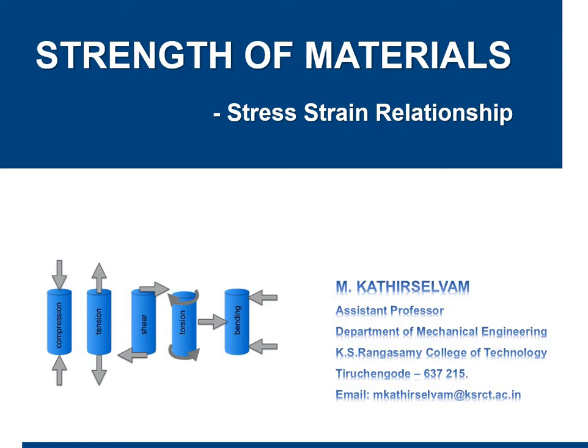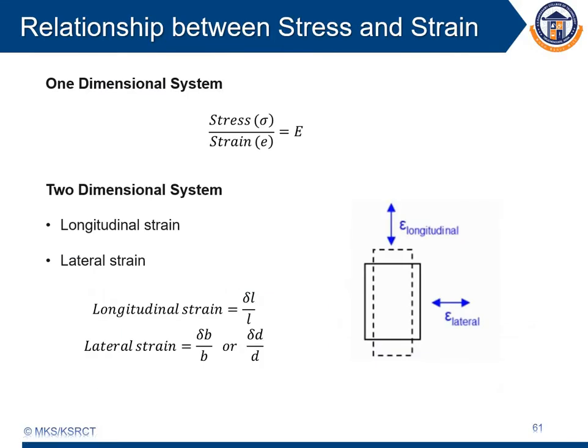Already in the previous video, we have discussed about what is meant by stress and what is meant by strain. The relationship between stress and strain is developed by Hooke's law. Based on Hooke's law, within the elastic limit, the stress will be directly proportional to the strain. In order to remove the proportionality constant, we use the constant called Young's modulus or modulus of elasticity.